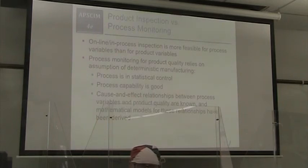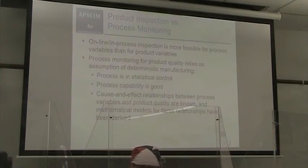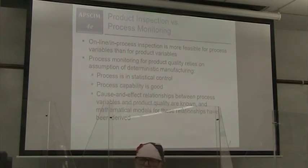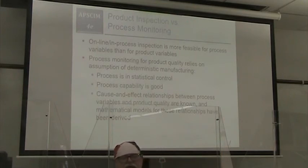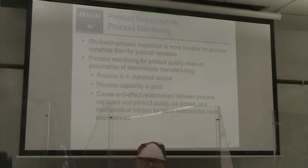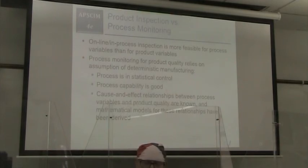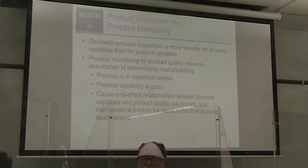Online in-process inspection is more feasible for process variables than for product variables. Process monitoring for product quality relies on the assumption of deterministic manufacturing — the process is in statistical control, process capability is good, and cause-and-effect relationships between process variables and product quality are known, with mathematical models already derived for those relationships.